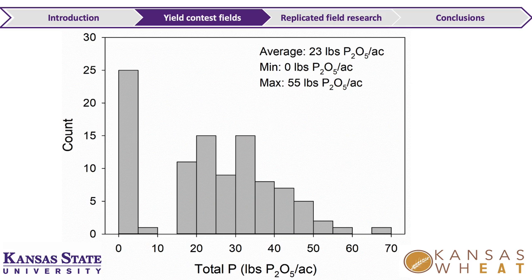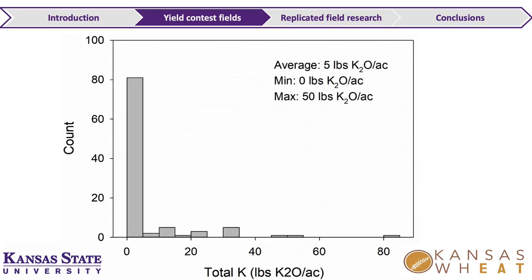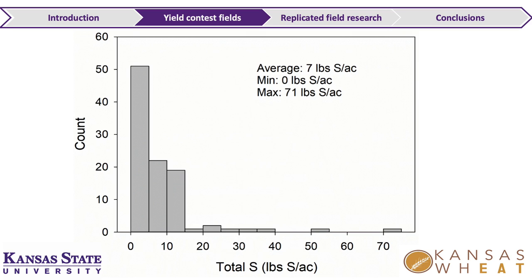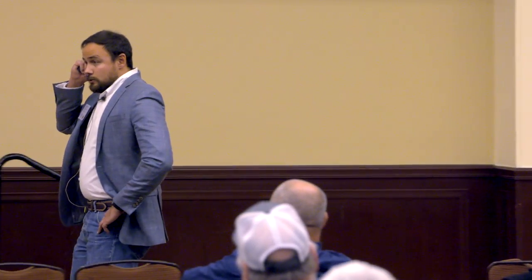For phosphorus, about 25 percent of fields used none, but on average 23 units of phosphorus were applied, up to 55 or more. Most growers didn't use potassium, but a few used up to 20 or more units. For sulfur, on average about 7 pounds per acre were applied. For an 80-bushel crop, sulfur uptake in the grain is close to 7 or 8 units, so it doesn't require a lot — but we're seeing more sulfur deficiency especially in south-central Kansas and likely in north-central Oklahoma as well.